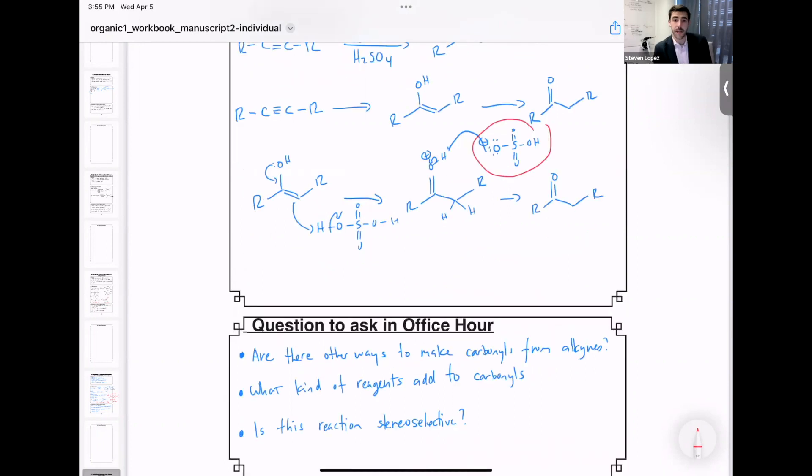So some questions you might ask in office hour. One, are there other ways to make carbonyls from alkynes? What kind of reagents add to these carbonyls once they're formed? And three, is this reaction stereoselective?